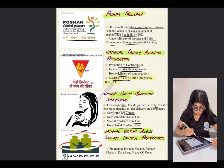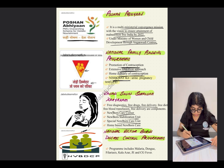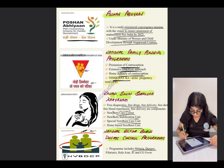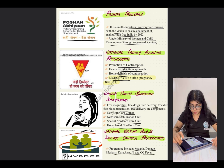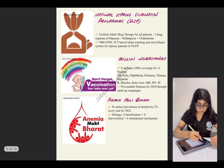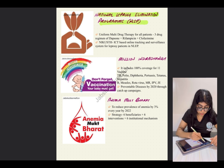The National Vector Borne Disease Control Program has a logo of a family protected by a red shield with a mosquito vector. This program includes protection against malaria, dengue, filariasis, kala-azar, Japanese encephalitis, and chikungunya fever.